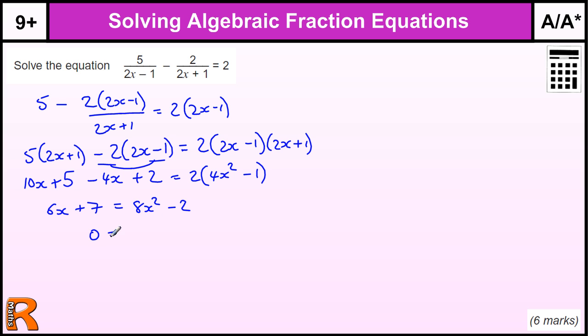You get a 0 here, we've got the 8x squared, we're going to take away the 6x, I'm going to take away the 7, and it's already take away 2, so that's take away 9. So we end up with that equation, just put the 0 over this side. And we've got our quadratic, that's an extra mark, so 4 marks we're getting to there.